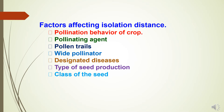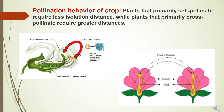Now let's study the factors affecting isolation distance. There are various factors: first is pollination behavior of crop; second is pollinating agent; third is pollen traits; fourth is white pollinator; fifth is designated diseases; sixth is type of seed production; and seventh is class of seed. Regarding the first factor — pollination behavior — plants that primarily self-pollinate require less isolation distance, while plants that primarily cross-pollinate require greater distance.